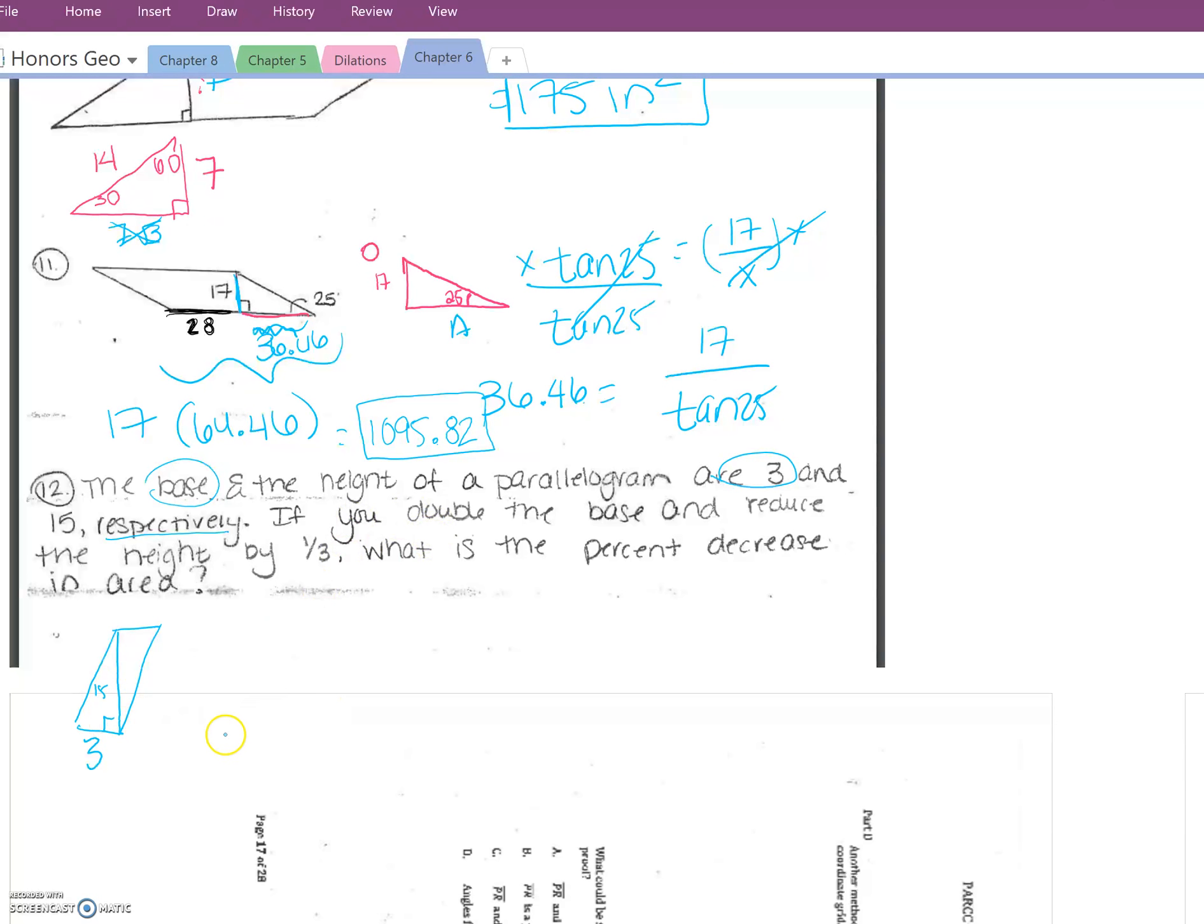If you double the base, so make this 6, and reduce the height by 1/3. Let's just talk about this. You want to reduce the height by a third. Do not take 15 and subtract 1/3. You want to reduce the height by a third of its original size. So what is 1/3 of 15? Well, 15 divided by 3 is 5, so now you're going to reduce the original height by 1/3 of the original height, which is 5, so you should get 10.